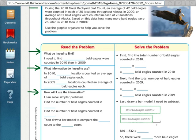So let's read this together. During the 2010 Great Backyard Bird Count, an average of 42 bald eagles were counted in each of 20 locations throughout Alaska. I'm just going to stop right there and underline the important things. 42, each is a multiplication word, and 20. So I know I'm going to have one problem of 42 times 20.